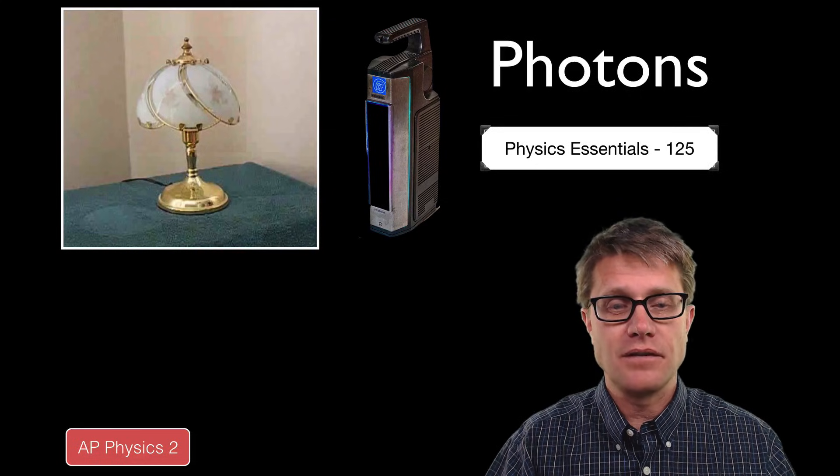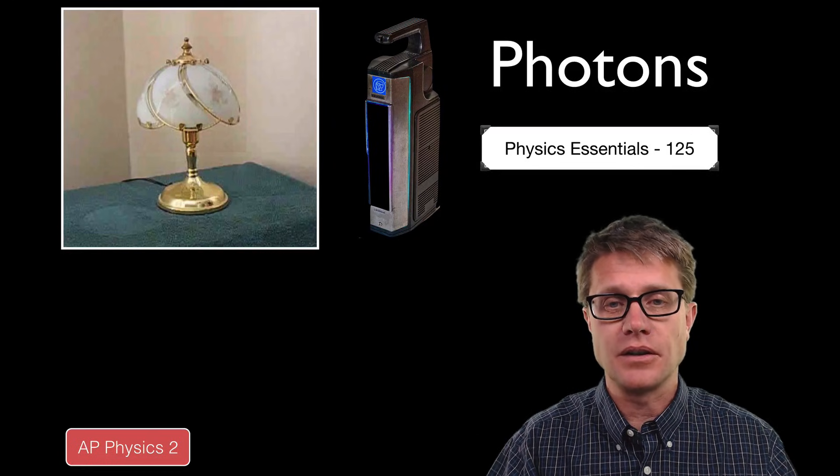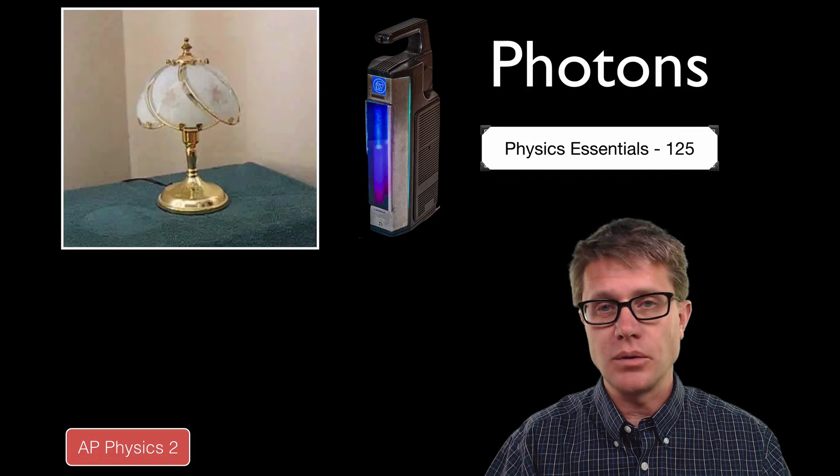I got an email from somebody and they said they have a touch light in their house. So you can touch it with your finger and it goes through different cycles. But they could hit it with a UV light and it would cycle through as well. And they wanted to know what was going on.